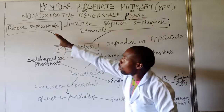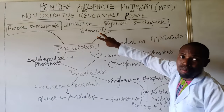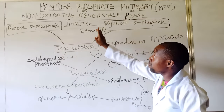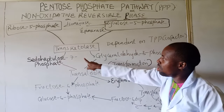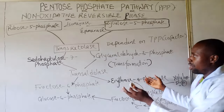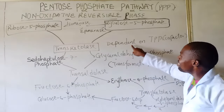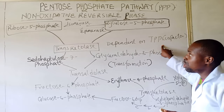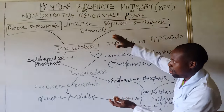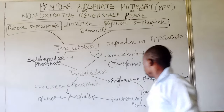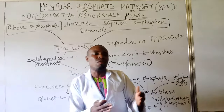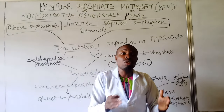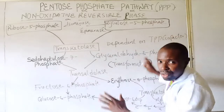Three carbons from the sedoheptulose-7-phosphate are added to the ribose-5-phosphate to give sedoheptulose-7-phosphate, and the enzyme involved is dependent on a cofactor called thiamine pyrophosphate. From there we move to the transaldolase, then again to the transketolase. This ends the block of lecture for the pentose phosphate pathway, precisely the non-oxidative reversible phase of this reaction.